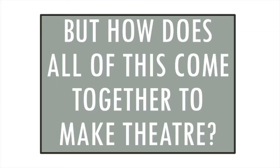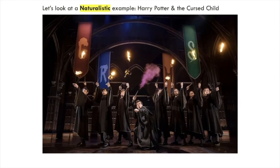But how does this all come together to make theatre? I've told you the different elements, but what does it actually look like? We're going to look at three short examples. The first is from a naturalistic example — this is a play that is trying to look like it is actually happening in front of us. This is a still image from Harry Potter and the Cursed Child, which is only in the West End on Charing Cross Road, and it is sold out all the time. So what different elements of technical theatre do we have?